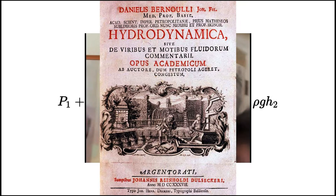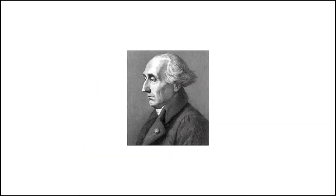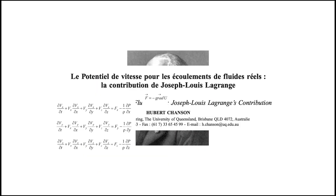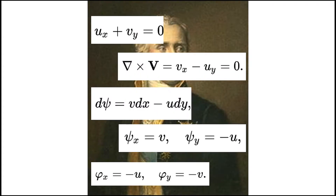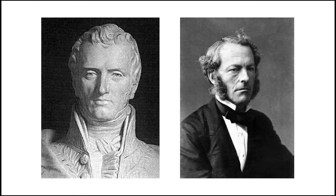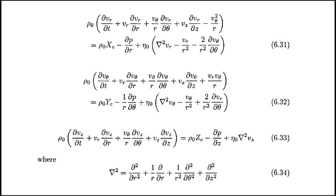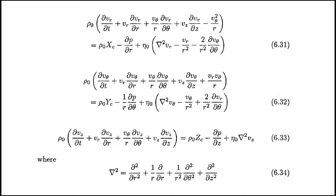Inviscid flow — the flow of an inviscid fluid in which the viscosity of the fluid is equal to zero — was further analyzed by various mathematicians including Joseph-Louis Lagrange, a French mathematician, and Pierre-Simon Laplace, among others. Viscous flow was explored by a multitude of engineers including Navier and Stokes, who provided further mathematical justification in the very famous Navier-Stokes equation — an equation you will encounter throughout your entire degree in fluid mechanics.